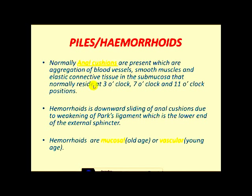Normally we have anal cushions in the anal canal, which are aggregations of blood vessels, smooth muscles, and elastic connective tissue in the submucosal plane, that normally reside at 3 o'clock, 7 o'clock, and 11 o'clock positions.